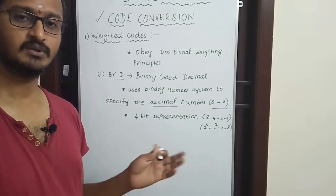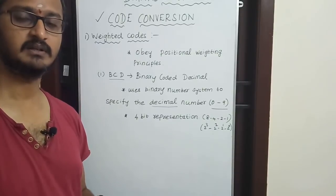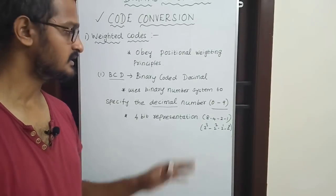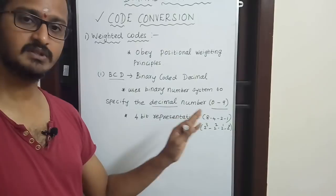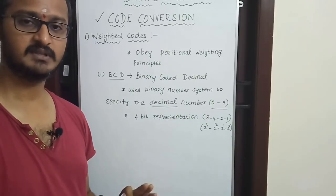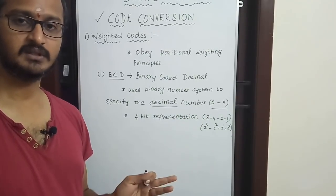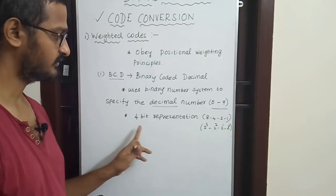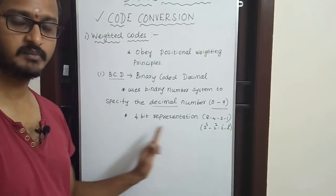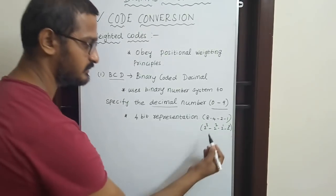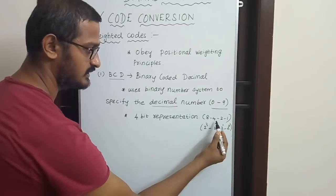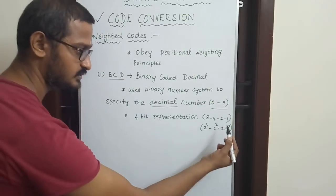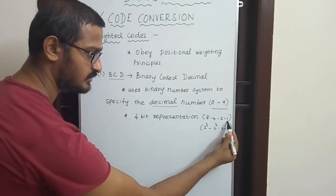Since decimal uses 0 to 9, that gives us 10 combinations. We represent each using 4 bits. We will look at the 8421 code, which is the first and most common weighted BCD code.